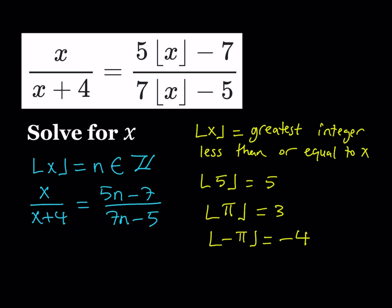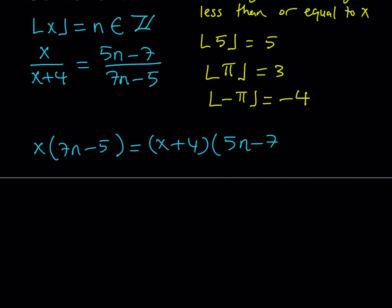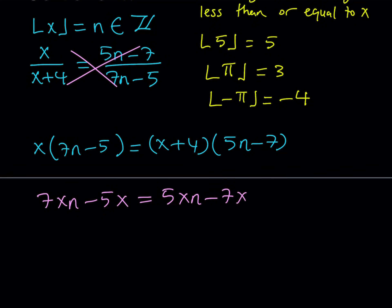We're going to solve for x by isolating it. We'll cross multiply: x times (7n − 5) equals (x + 4) times (5n − 7). Distributing the right-hand side gives us 7xn − 5x equals 5xn − 7x + 20n − 28.